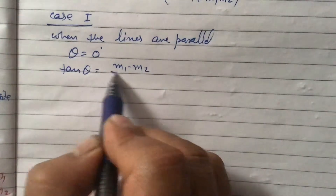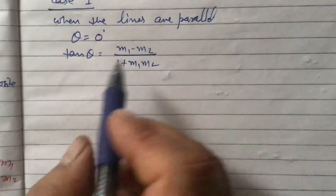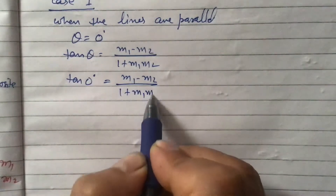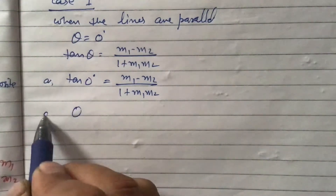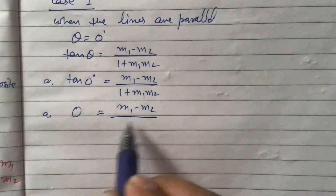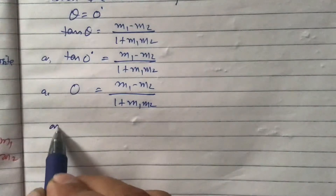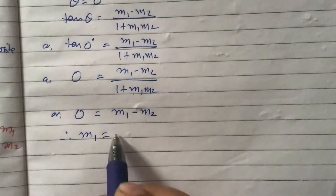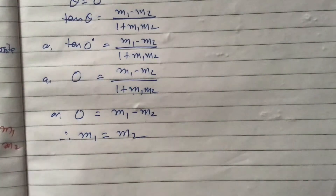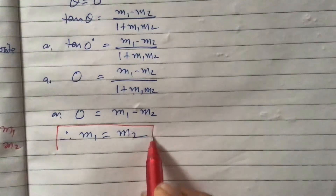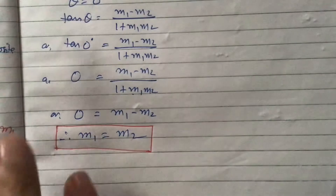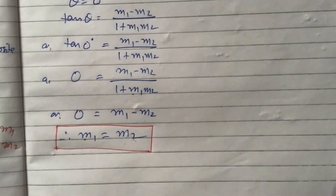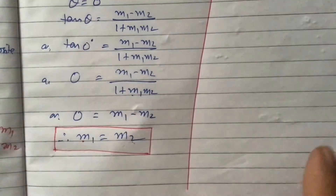So tan(0°) = (m1 − m2)/(1 + m1·m2). Since tan(0°) = 0, we get 0 = m1 − m2, therefore m1 = m2. This is the condition for the lines to be parallel: if the lines are parallel, their slopes are equal, and vice versa — if slopes are equal, the lines are parallel.